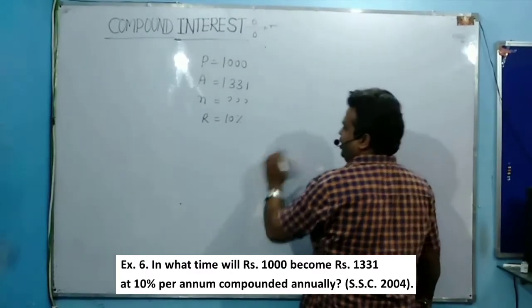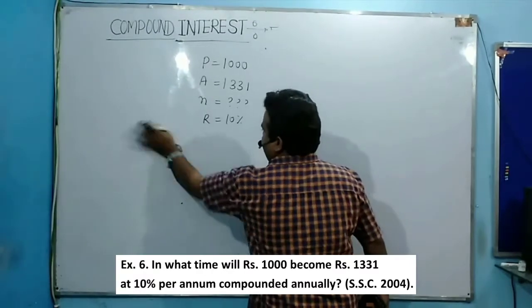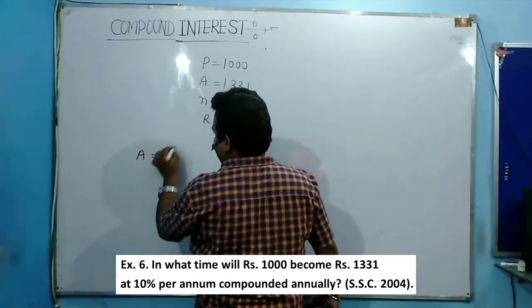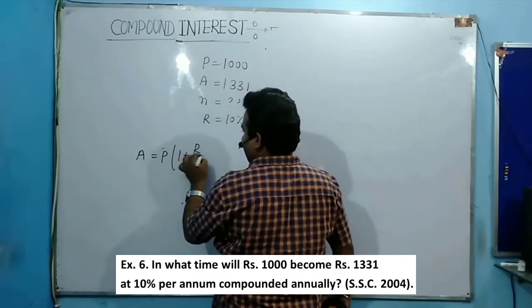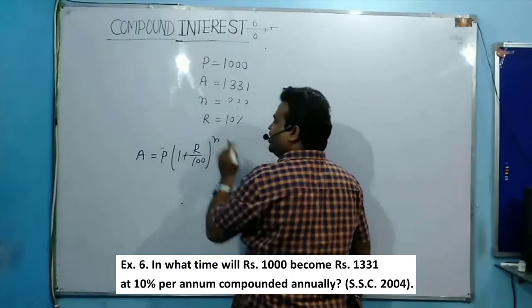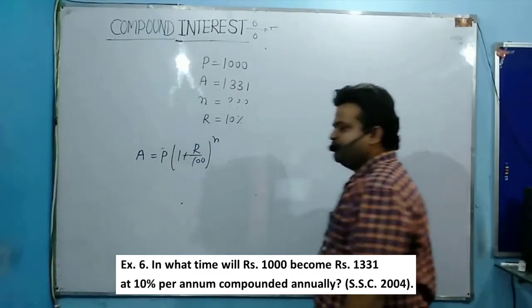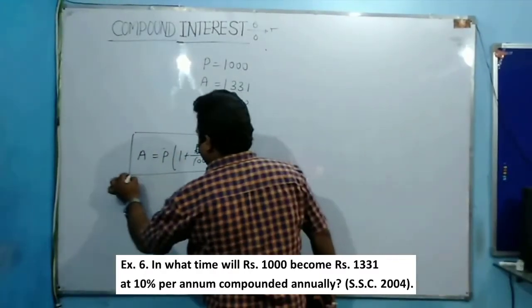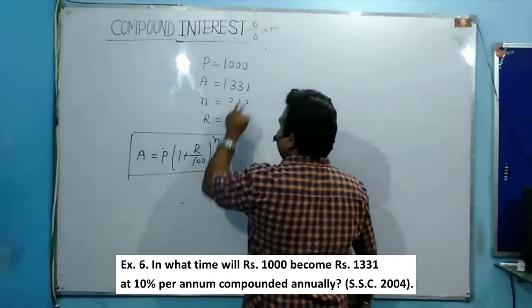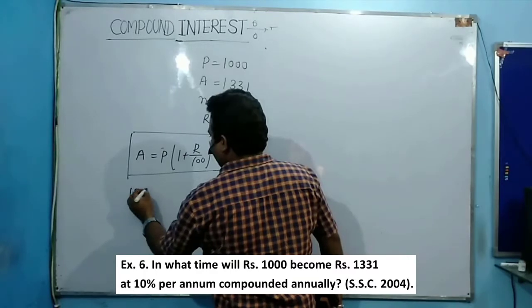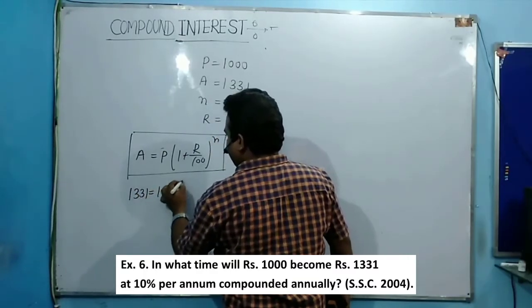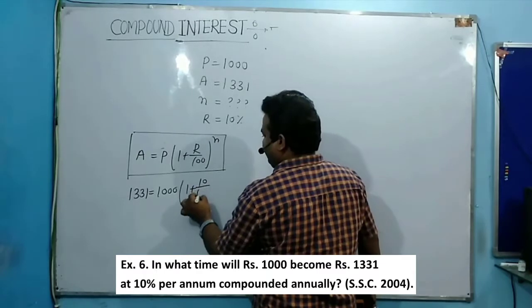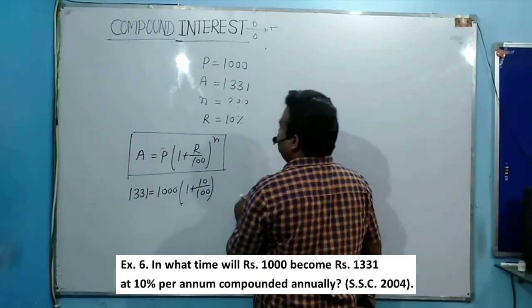So how do you solve this kind of question? The formula is: A = P × (1 + r/100)^n. This is the basic formula I am going to apply here. The A value is given as 1331, and P value is 1000, r is 10 divided by 100, raised to the power n.